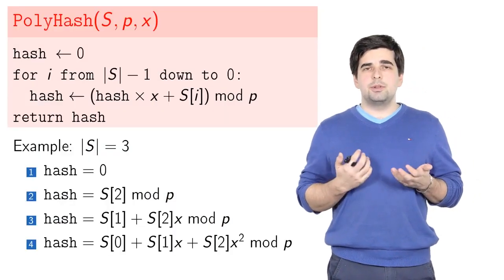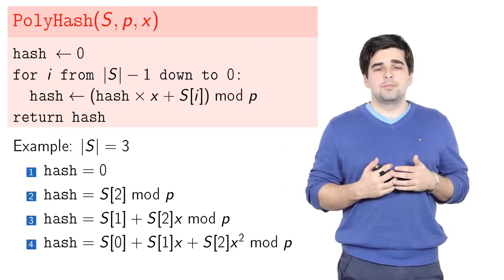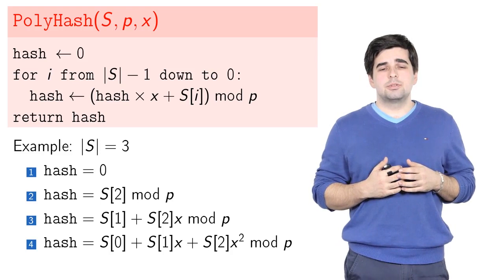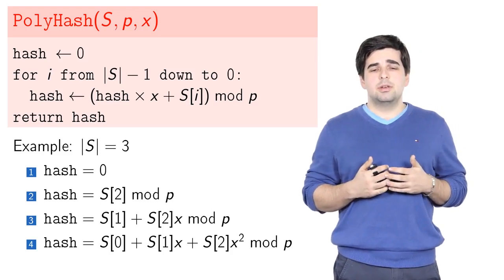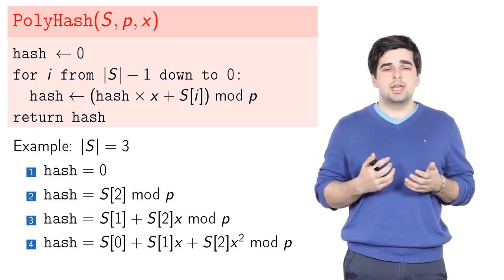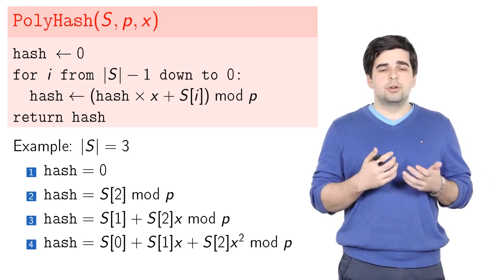So how can we implement a hash function from this family? The procedure PolyHash, which takes as input string s, prime number p, and parameter x, implements the hash function from our family. It starts with assigning a value of 0 to the result, to the hash value we will return in the end.